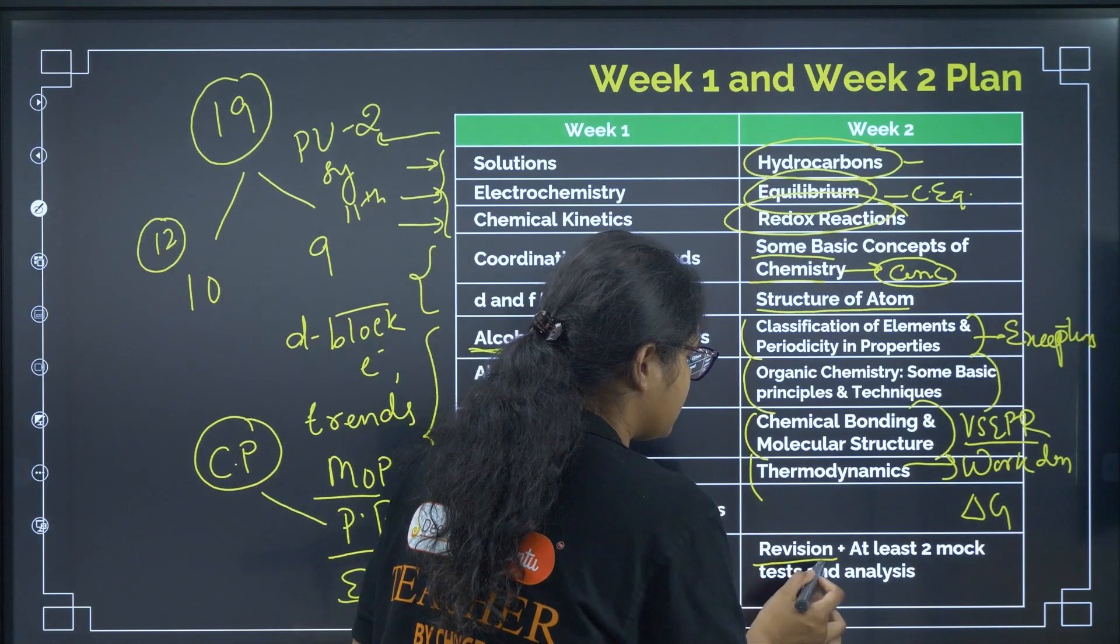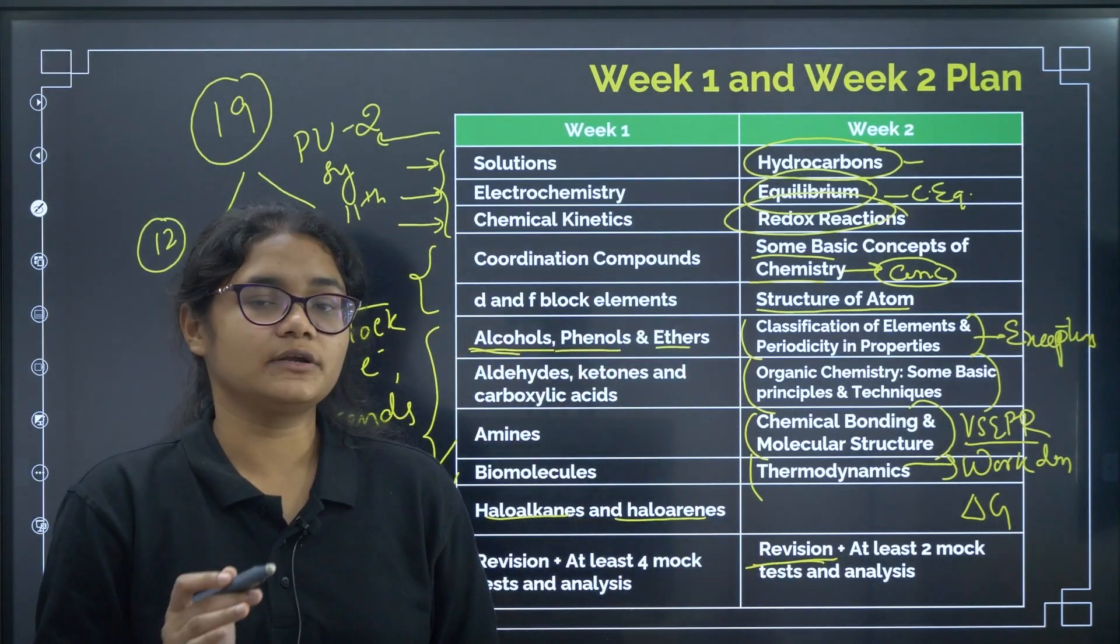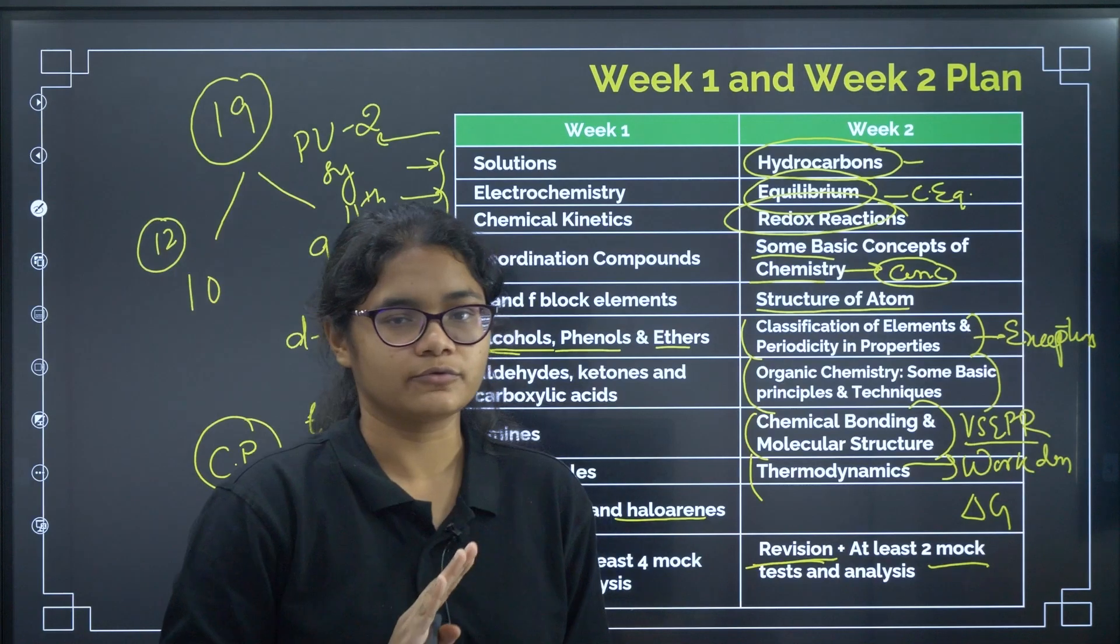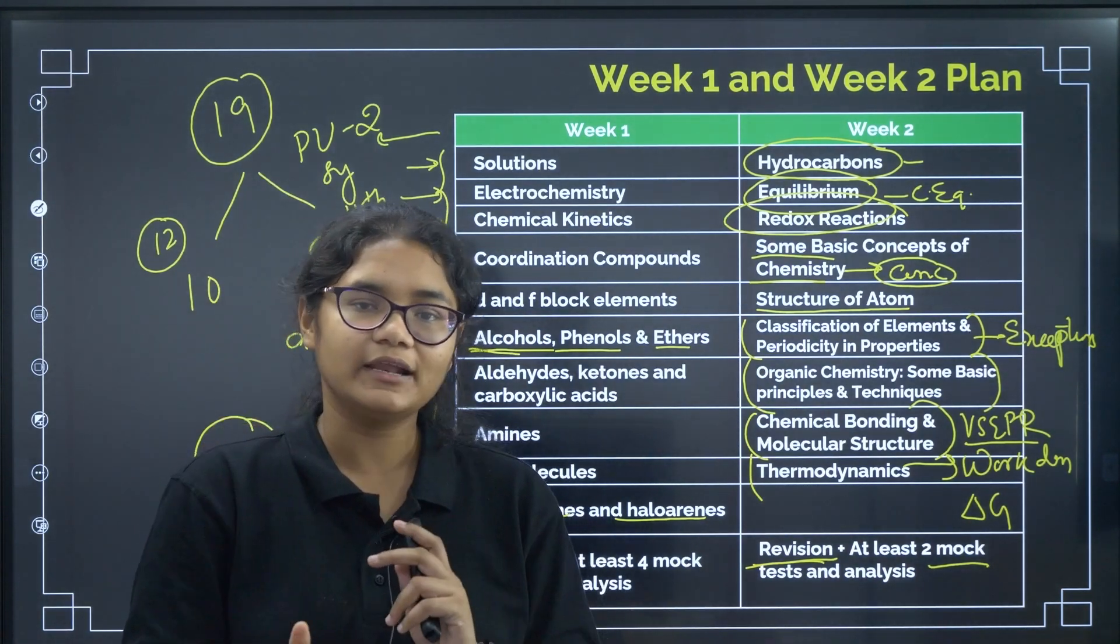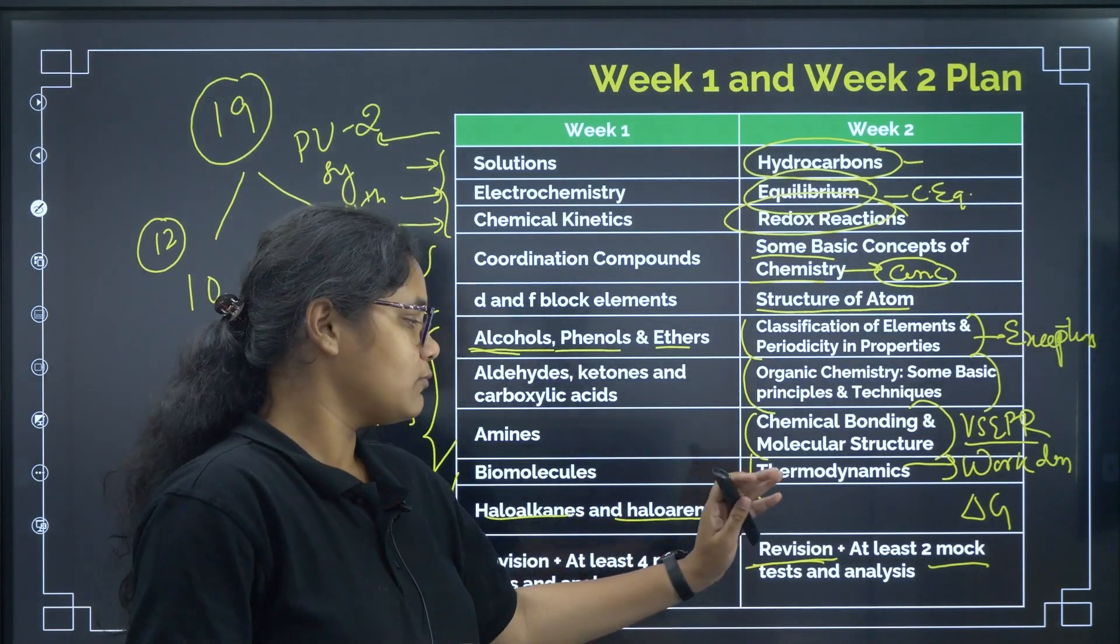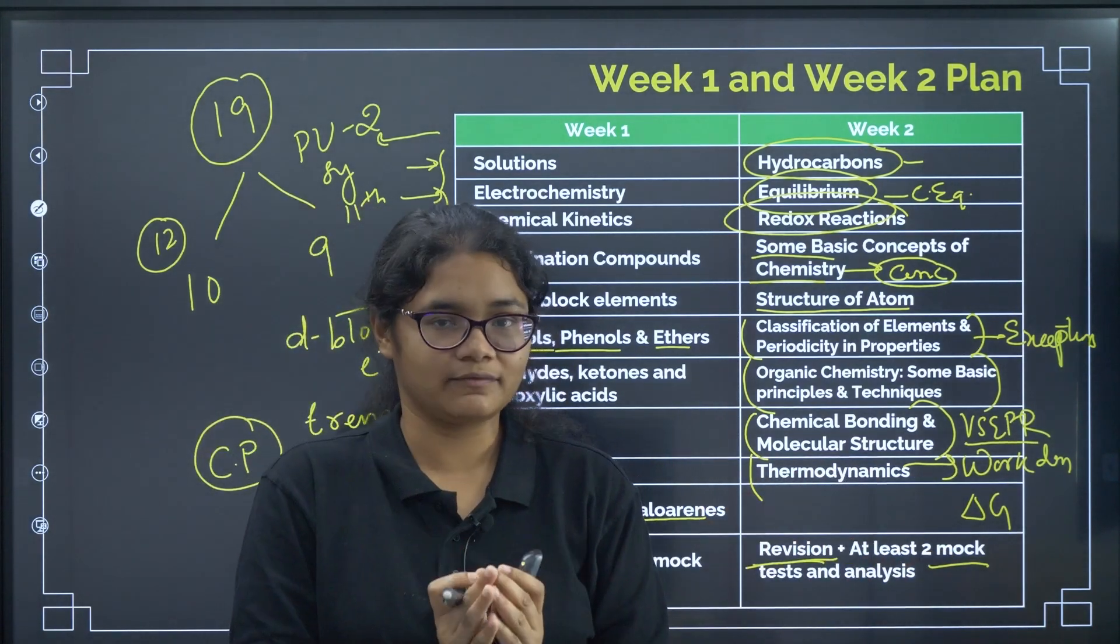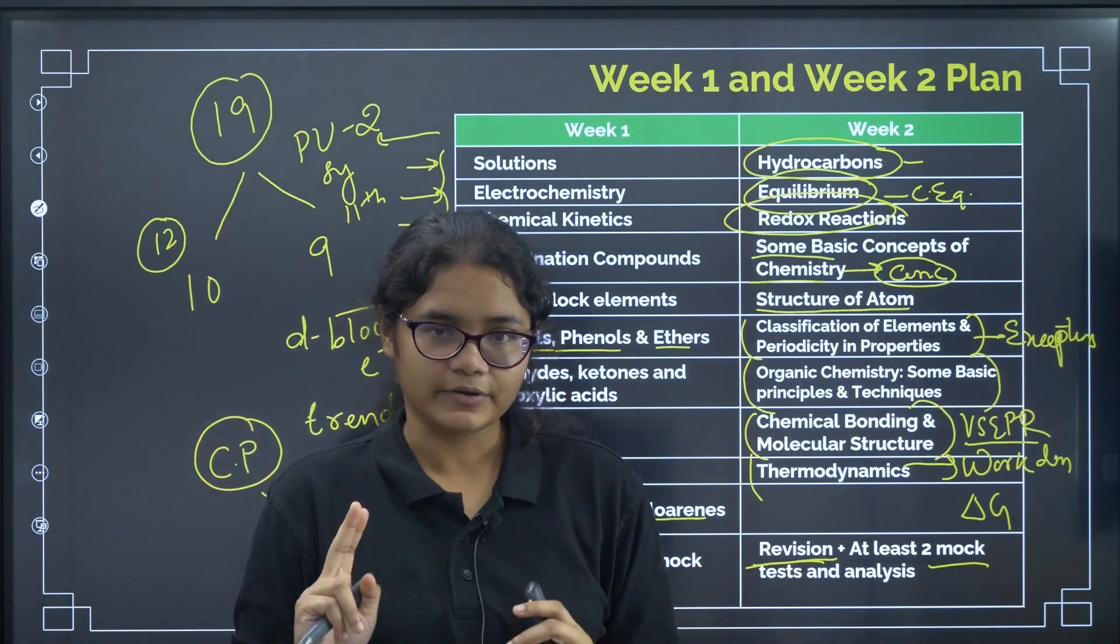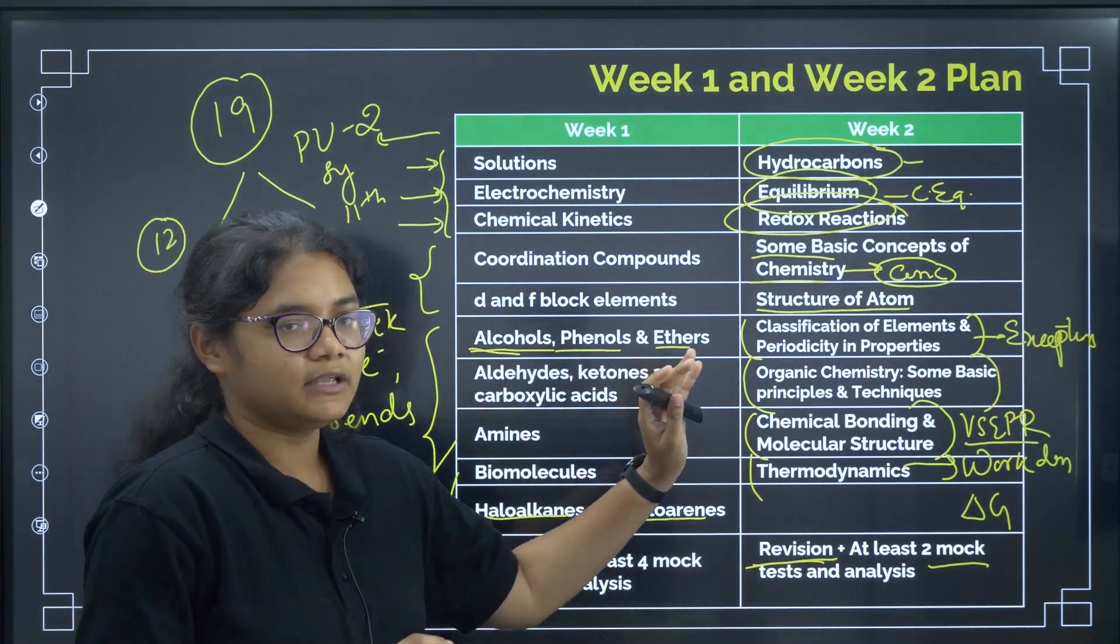Next, in this last week, complete revision, give more time to revision, don't do many mock tests. I will be suggesting only two mock tests you have to do. Just try to do just two mock tests, analyze them. You should work on your weak points there, but giving so many mock tests in the last week may demotivate you. So, just do complete revision and two mock tests. This is a broad plan for week one and week two.